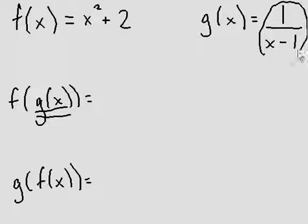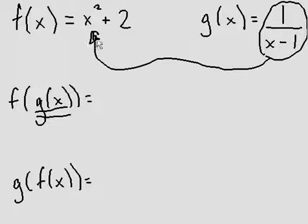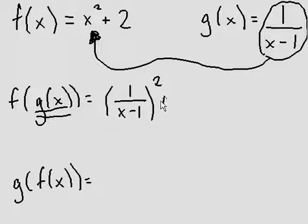So it goes like this. I put it in brackets. That is g of x and replaces the x. So I need to square it there, plus 2.